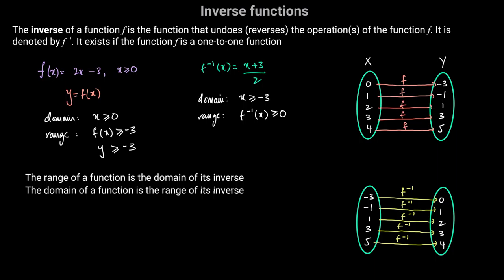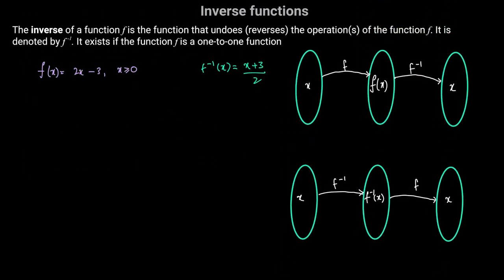If I have an input x and apply function f, I get f of x. The function f inverse will undo or reverse the operations of f and return the original input x. Similarly, if I have an input x and apply f inverse, I get f inverse of x as the output. And since f is the inverse of f inverse, applying f to f inverse of x will reverse the operation of f inverse and return the original input x.